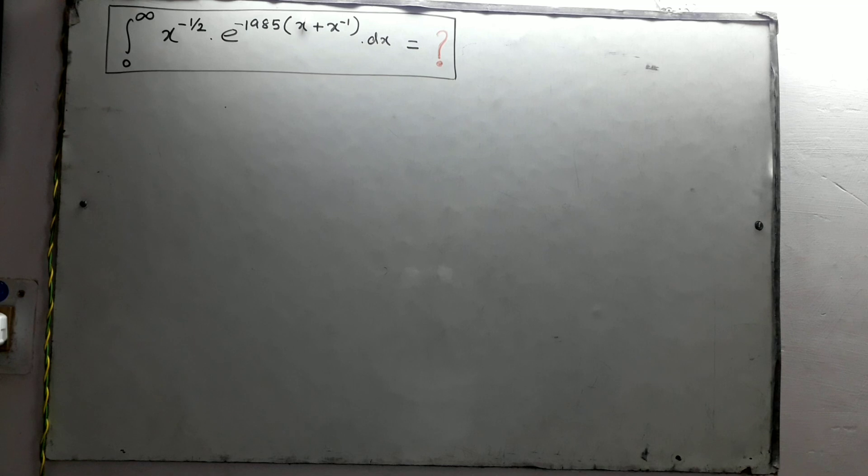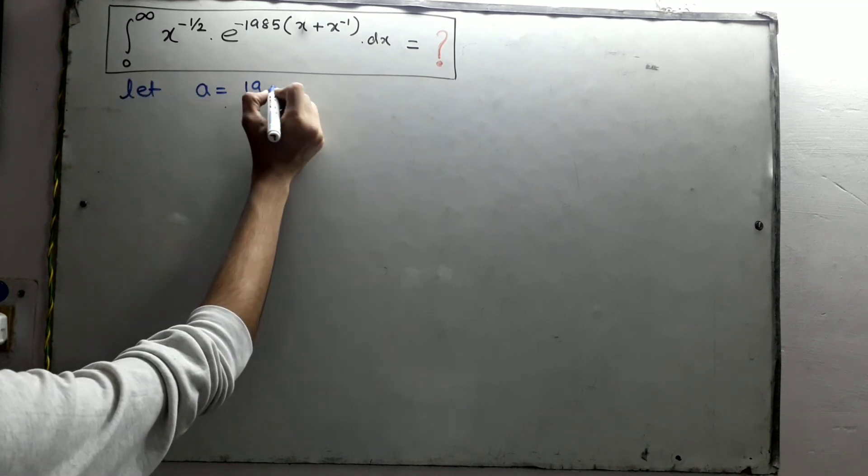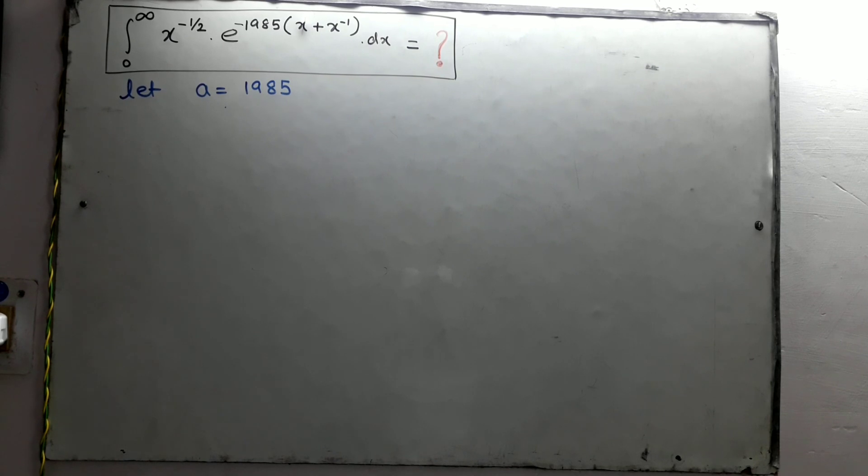First of all, we cannot write 1985 again and again, so let this 1985 equals a. So now we have our integral with parameter a.